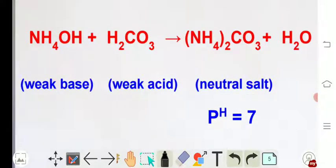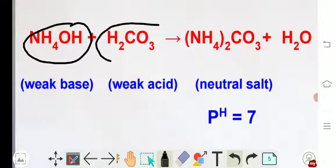This is the next example my dear friends. We have got here weak base that is ammonium hydroxide and weak acid that is carbonic acid.